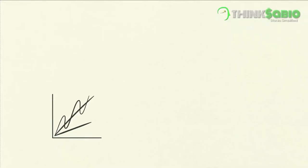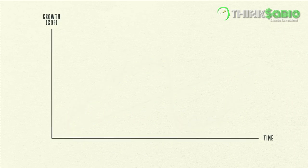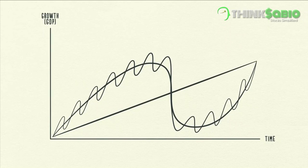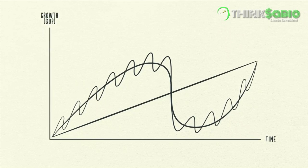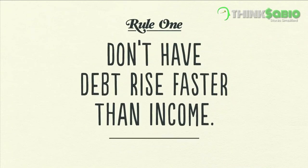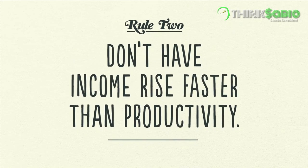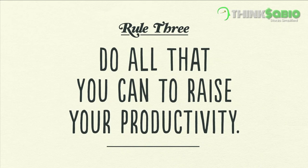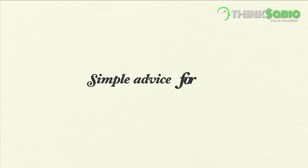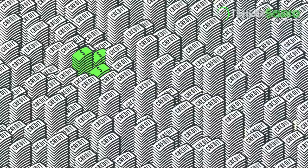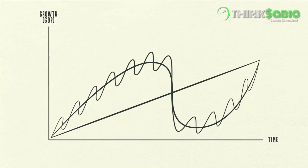Of course, the economy is a little bit more complicated than this template suggests. However, laying the short-term debt cycle on top of the long-term debt cycle and then laying both of them on top of the productivity growth line gives a reasonably good template for seeing where we've been, where we are now, and where we're probably headed. In summary, there are three rules of thumb: first, don't have debt rise faster than income because your debt burdens will eventually crush you; second, don't have income rise faster than productivity because you'll eventually become uncompetitive; and third, do all that you can to raise your productivity because in the long run, that's what matters most. This is simple advice for you and for policymakers. This template has worked for me and I hope it will work for you.